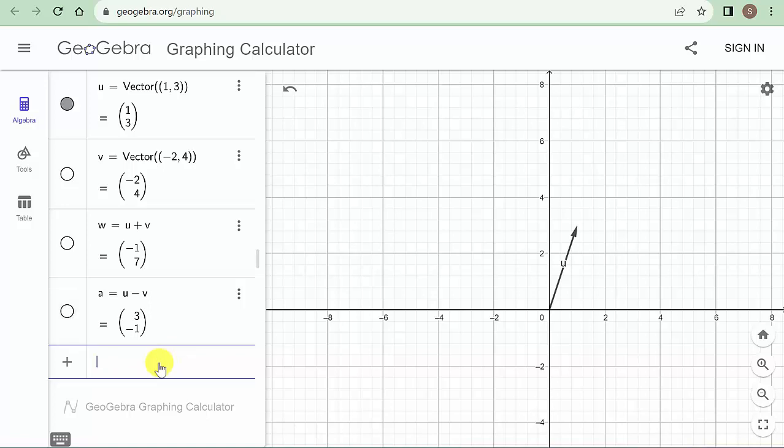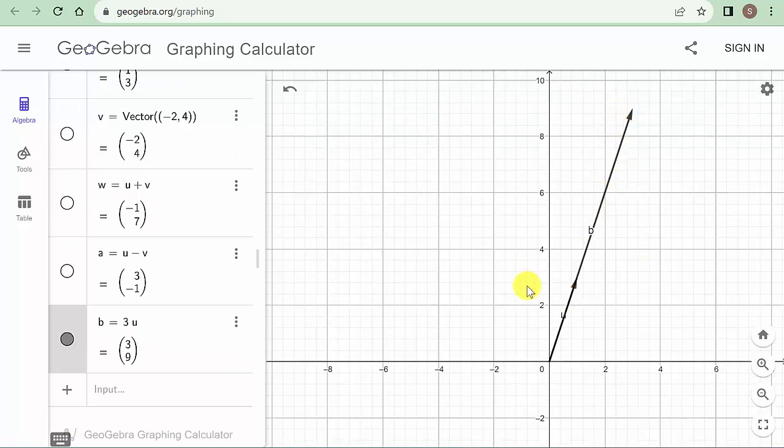So let's hide that one and let's hide v. So let's do 3 times vector u. And you can see it puts that vector there. That's 3 times that vector.